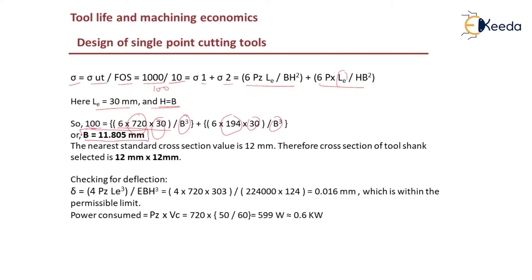By this you can find out the b value which is 11.805 mm. The nearest cross section value for this is around 12 mm, so it is approximately 12. As it is square cross section it is 12 by 12.